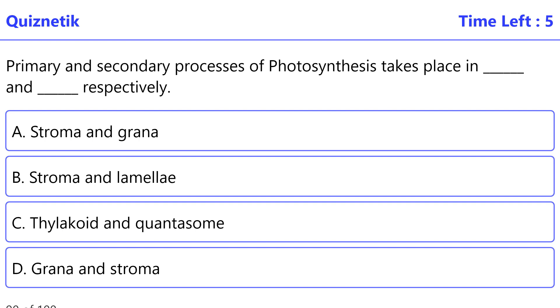Primary and secondary processes of photosynthesis take place in, respectively - the correct option is D: grana and stroma.